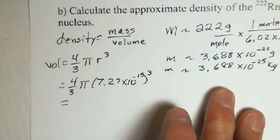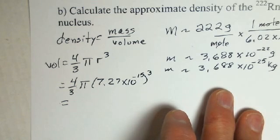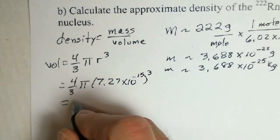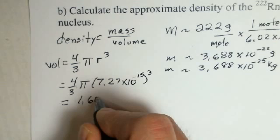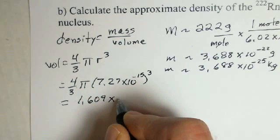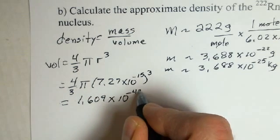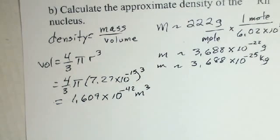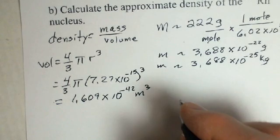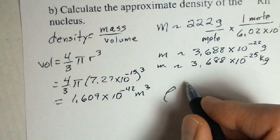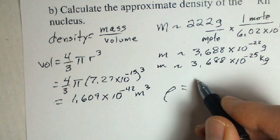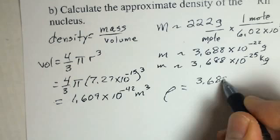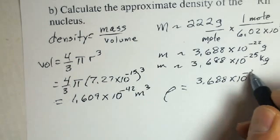If you go ahead, you've got to pause and do this on your own calculator. And I came up 1.609, 10 to the minus 42 cubic meters. We're ready now to calculate the density. We combine these two numbers. The mass of one nucleus, 3.688,